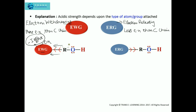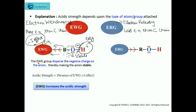Now, due to this minus I effect, and this group being more electronegative, there is attraction of electrons towards this group. So, there will be dispersion of the negative charge on the anion. Due to the spreading of the negative charge on this ion, this anion will become stable. And due to this, the force of attraction between this anion and the proton will decrease, making the removal of this proton easy. Therefore, the acidic strength will increase. We can conclude that the electron withdrawing group disperses the negative charge on the anion, thereby making the anion stable. The acidic strength is directly proportional to the presence of the electron withdrawing group, that is, the group which shows minus I effect. So, the presence of an electron withdrawing group increases the acidic strength of the compound.